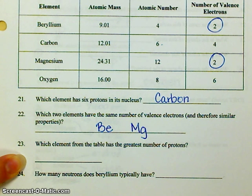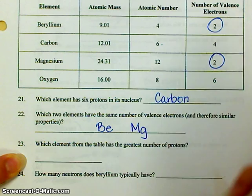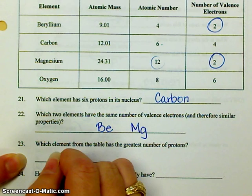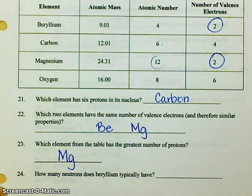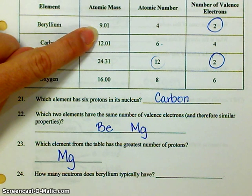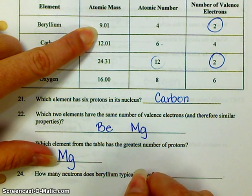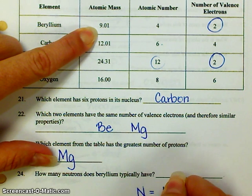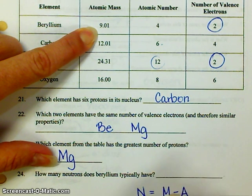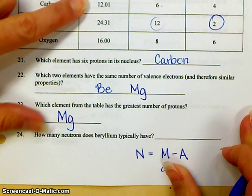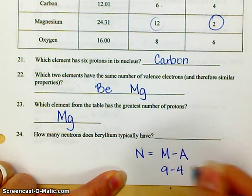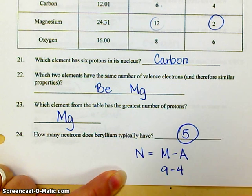Which element from the table has the greatest number of protons? That's going to be the atom with the greatest atomic number — that's magnesium. How many neutrons does beryllium typically have? If the atomic mass rounds off to 9, and you get neutrons by saying mass number minus atomic number, that's 9 minus 4 — beryllium usually has 5 neutrons.